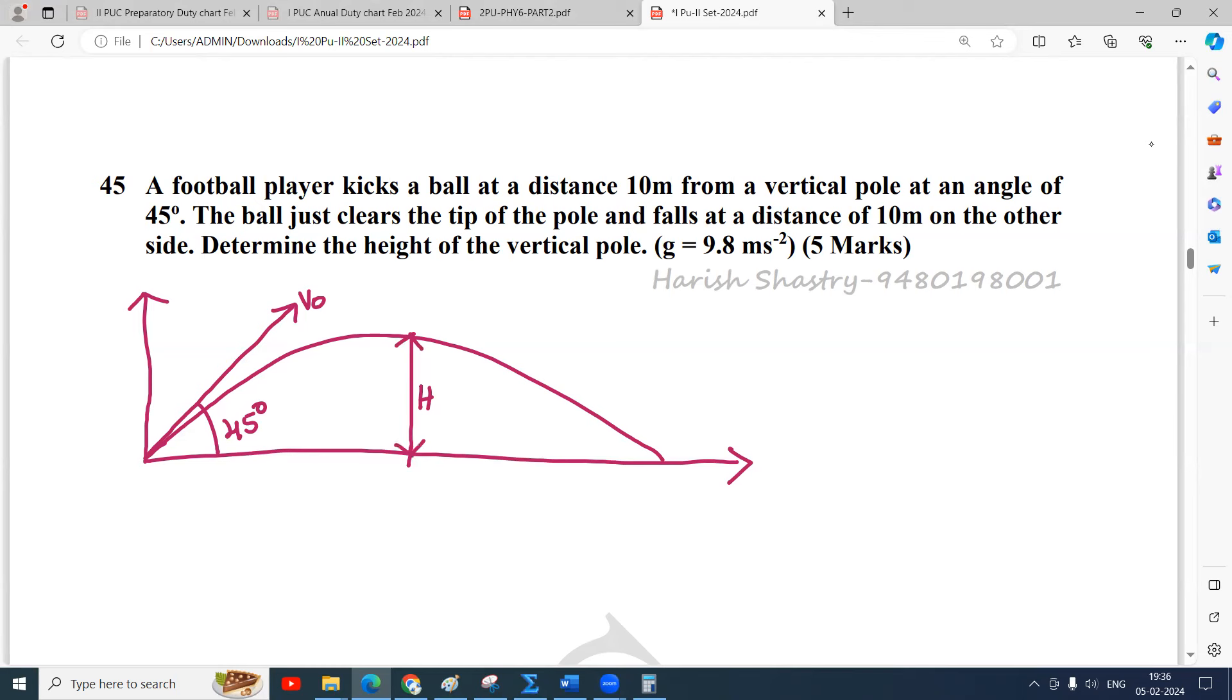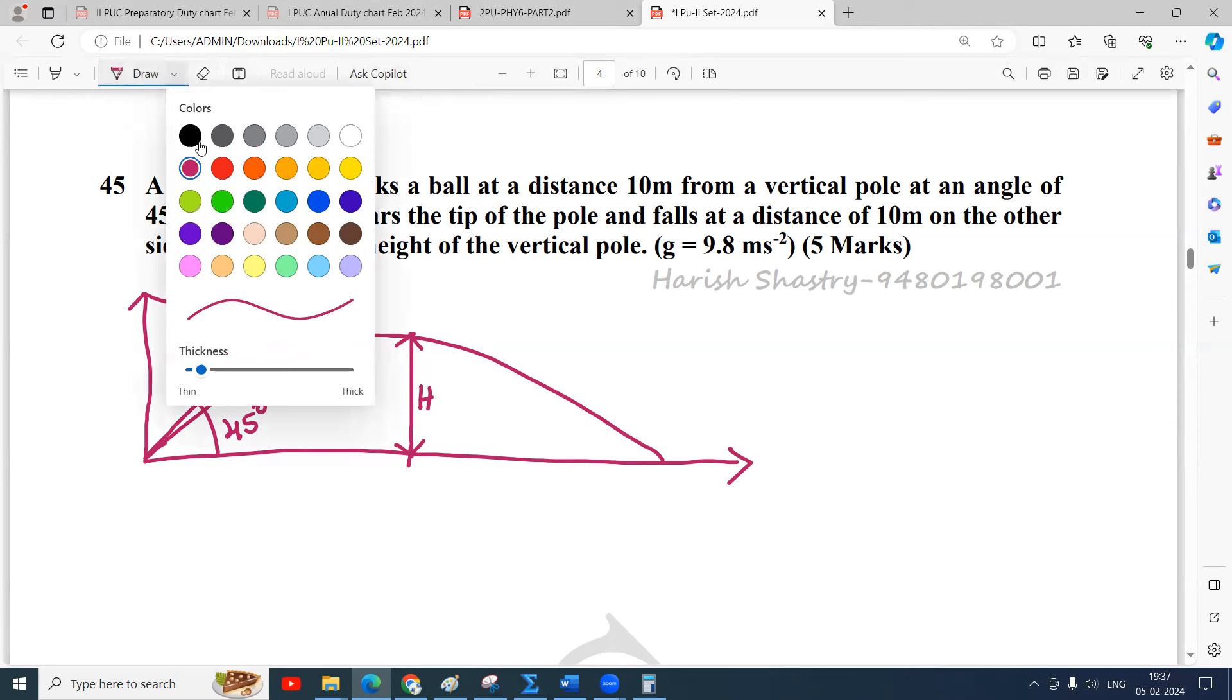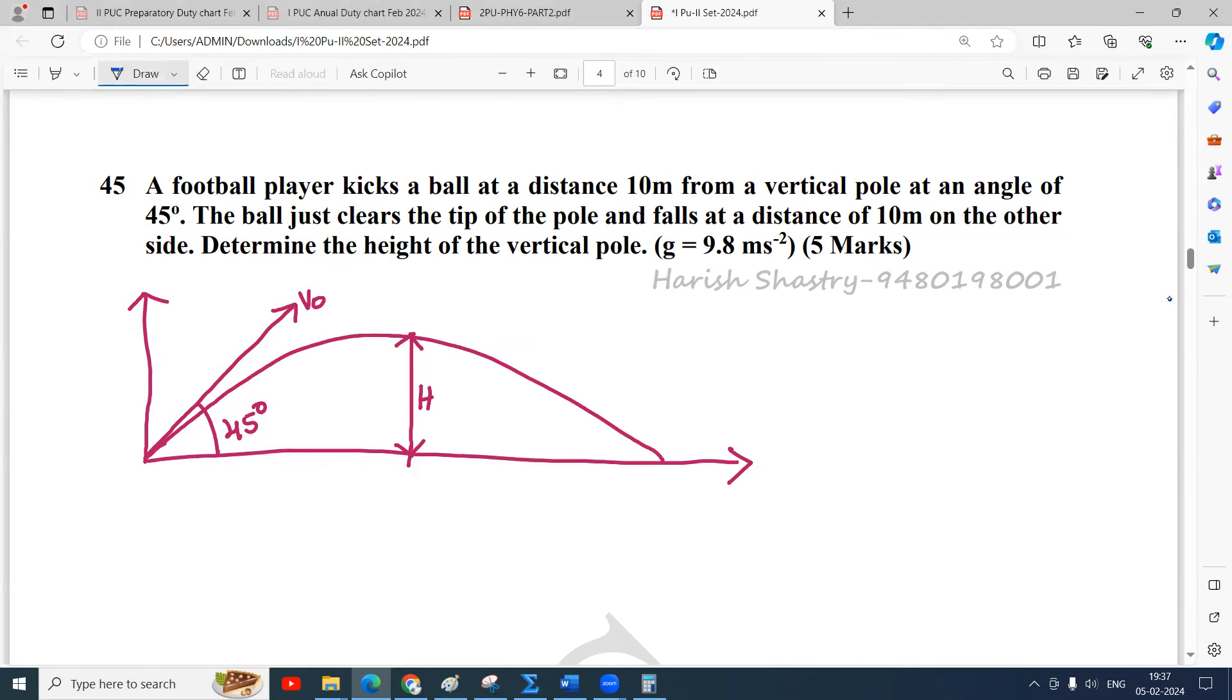This is the maximum height. The football is kicked at a distance of 10 meters from the goal post and falls at a distance of 10 meters away from it. That means the maximum height occurs at the goal post itself. Because the 10 meters and 10 meters are equally divided, the total range becomes 20 meters.